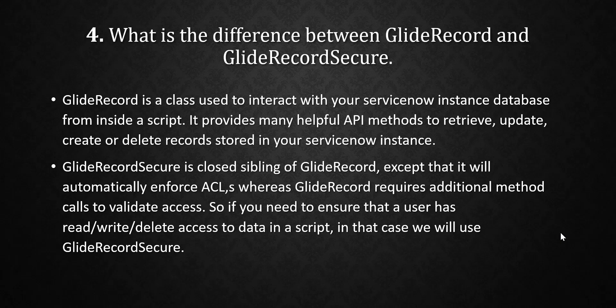Next question: what is the difference between GlideRecord and GlideRecordSecure? GlideRecord is a class used to interact with your ServiceNow instance database from inside a script. It provides many helpful API methods to retrieve, update, create, or delete records. GlideRecordSecure is a close sibling of GlideRecord — very similar, except it automatically enforces ACLs, whereas GlideRecord requires additional method calls to validate access. So if you need to ensure a user has read, write, or delete access to data in a script, use GlideRecordSecure.